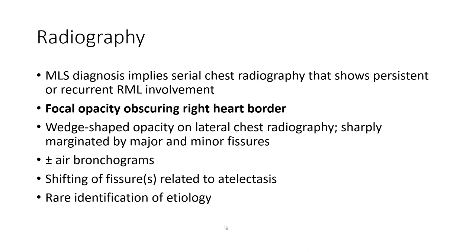On radiograph, middle-lobe syndrome diagnosis implies serial chest radiography showing persistent or recurrent right middle-lobe involvement. Findings include focal opacity obscuring the right heart border, wedge-shaped opacity on lateral chest radiography, sharply marginated by major and minor fissures, with or without air bronchograms, and fissure shifting related to atelectasis.